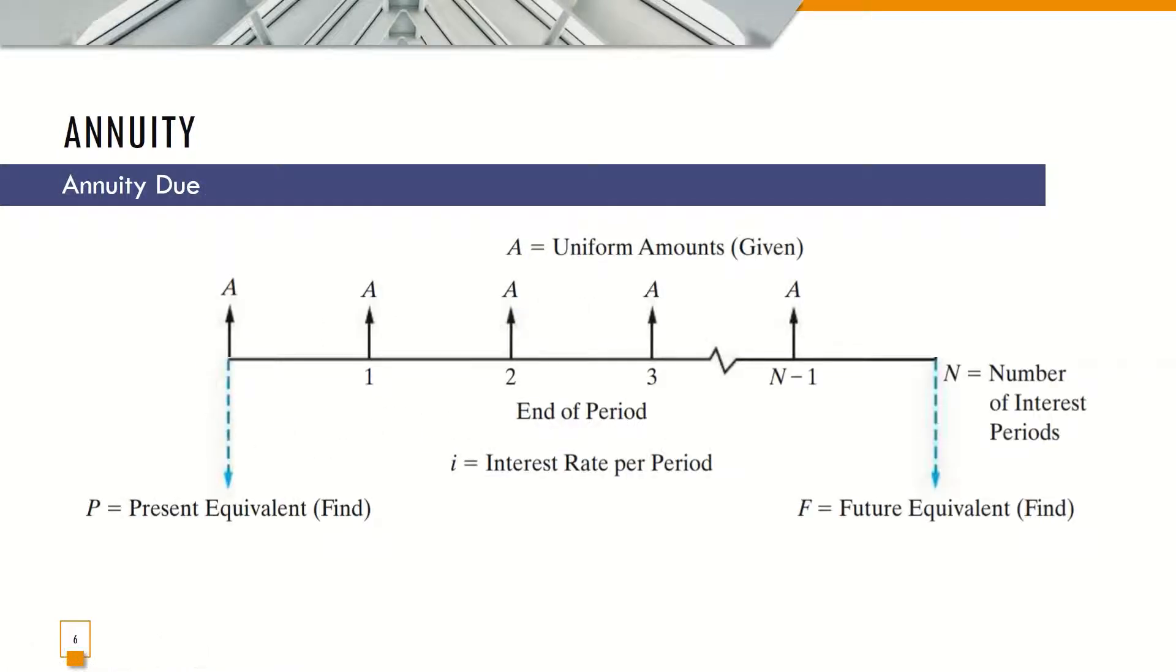For the Annuity Due, this is the cash flow diagram. It is an annuity wherein the first annuity payment is made at the beginning of the period. As we can see in our cash flow diagram, the final period N, at the Nth period, there is no annuity made, so that is for finding the future value.